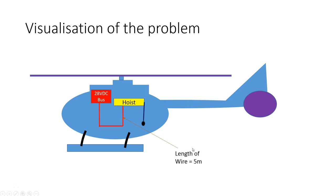So we are going to visualize the issue here. So we have a 28V DC bus and the wire is going to run from the bus bar all the way to the hoist. And we are going to assume that the wire here is 5 meters length.